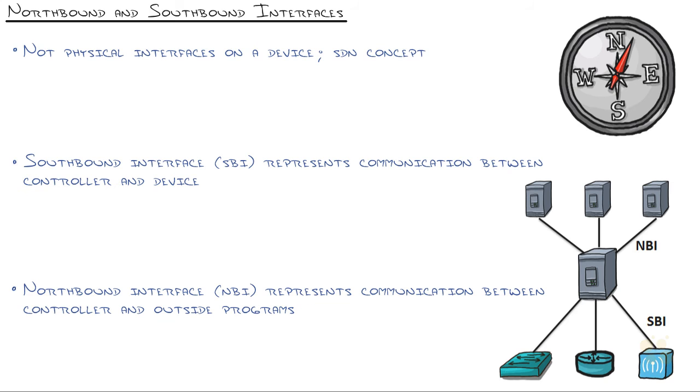And that leads us to the concept of northbound and southbound interfaces. That's something that confused me for a while when I got into SDN initially because I'm thinking, okay, interfaces. So this must be like up and down traffic or how does this work? So when you hear the concept of northbound and southbound interfaces, the first thing I want you to erase from your mind is interfaces.